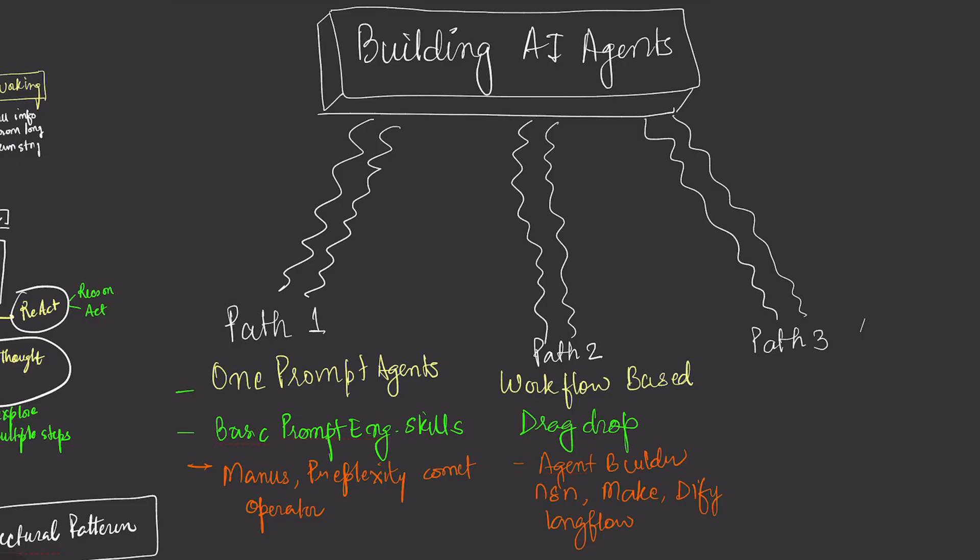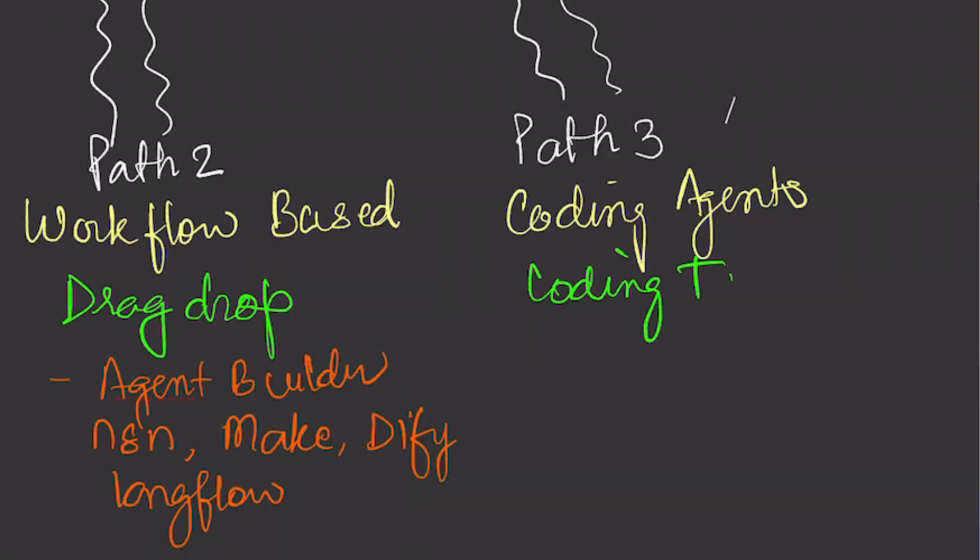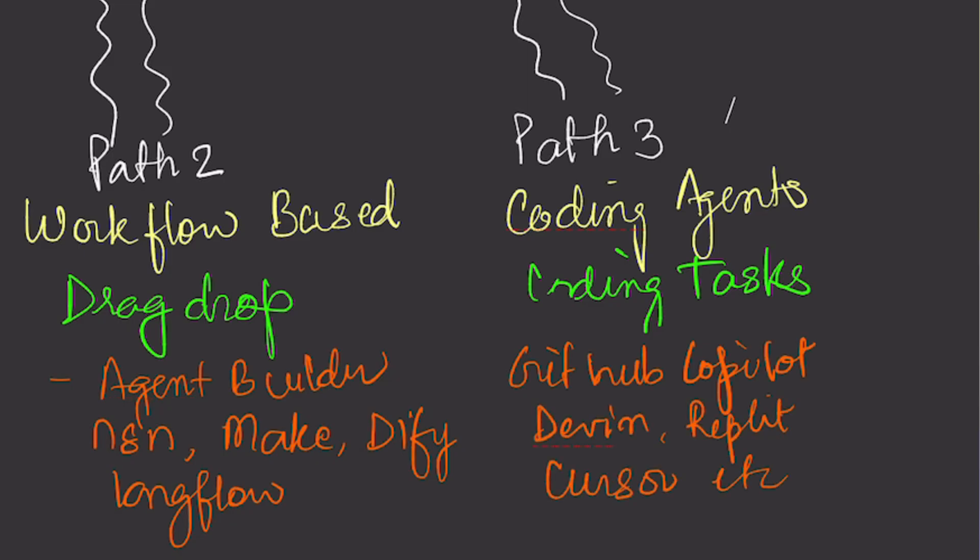Medium difficulty could be path three, the coding agents. These are specialized AI agents designed to help you with coding tasks themselves. These are tools like Devon, Replit, Jules, Cursor, GitHub Copilot, debugging issues. Use these to automate development tasks and accelerate your coding workflows. The difficulty varies based on your programming knowledge.